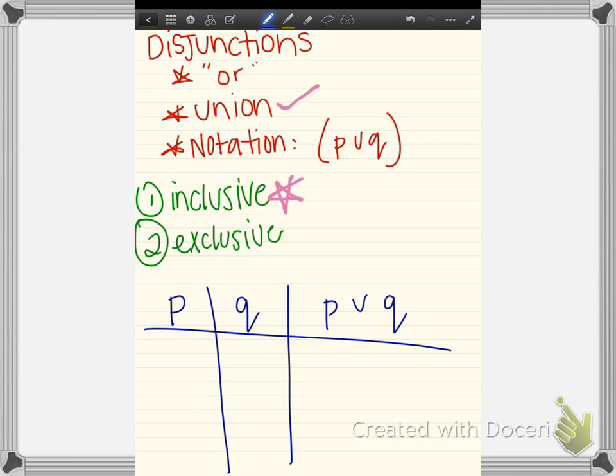So like we did before, we're going to make our truth table. P could be true, Q could be false; P true, Q true; P false, Q false; P false, Q true.